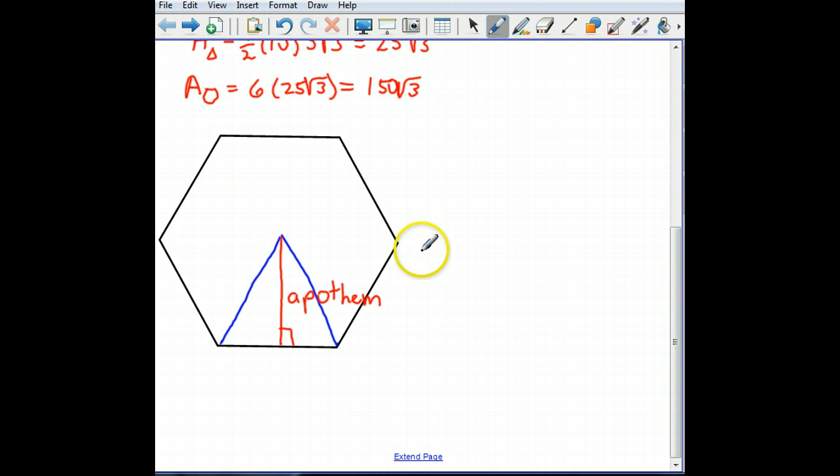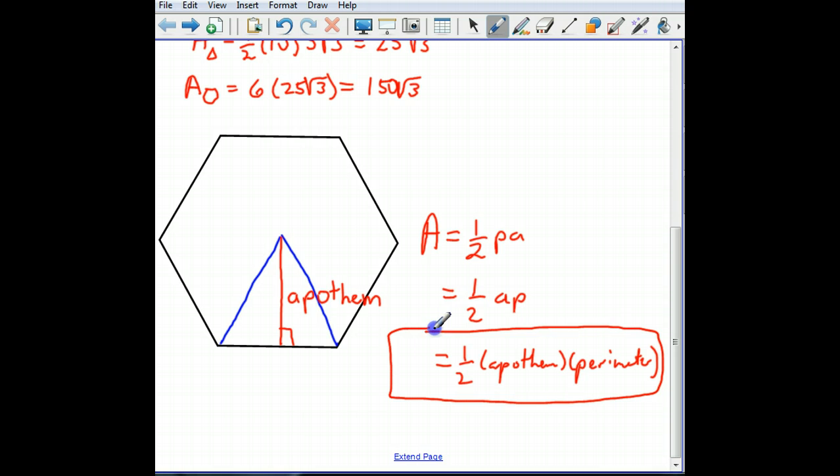And if you think about it, since that's also the height of this triangle, the total area is going to be one half times all the bases, which is called the perimeter of the polygon, times the apothem. Now, I think your book writes it like this, one half A-P. But that just stands for one half, the apothem of the polygon, times the perimeter. And that is the formula for the area of a regular polygon.